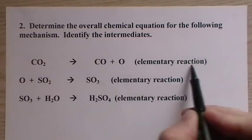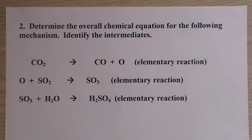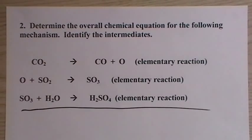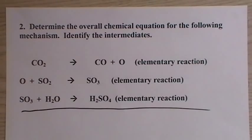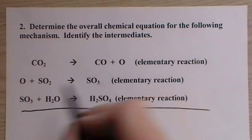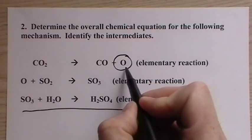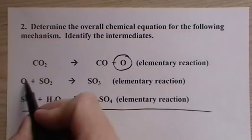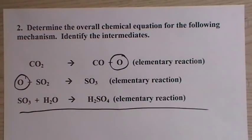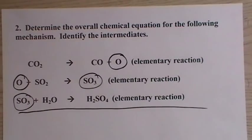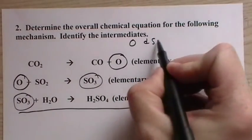Same thing here, when you see elementary reaction, that tells you you're dealing with a mechanism. The same thing, we need the same thing for this problem, the overall reaction. Instead of writing them all out and canceling them, you can see we have atomic oxygen here as a product. It then goes on to become a reactant over here, gets used up. SO3 as a product, it goes and becomes a reactant in the next step. So those are our two intermediates.